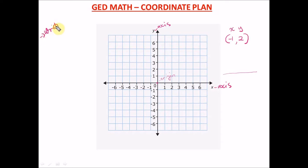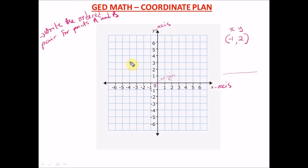Let's say you're given a coordinate grid on your GED math test and you're asked to write the ordered pair for points A and B. Point A is plotted somewhere on the grid and point B is another point. The task is to write the ordered pair for each of these points.